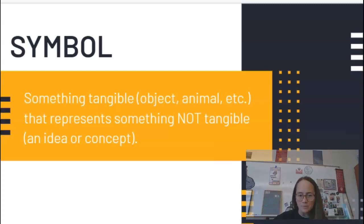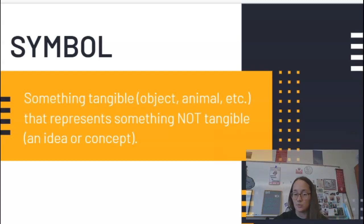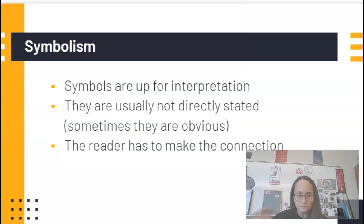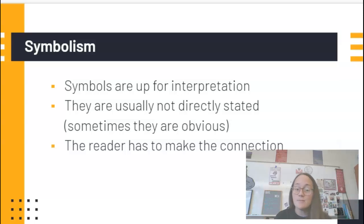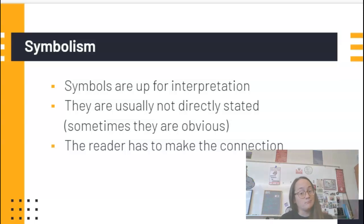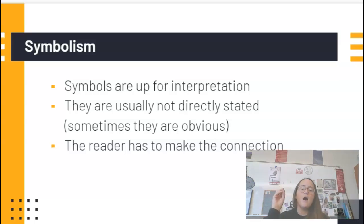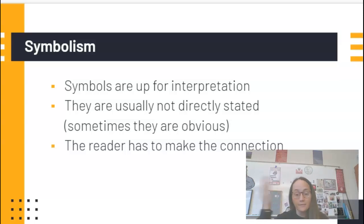We're going to talk more about symbols today. Before we get into looking at it in our story, I'm going to give you some examples from stories we've seen this year. Before we get into those stories, the first thing I want to mention is that symbols are up for interpretation — meaning I might see something and think it means one thing, and somebody else might think it means something different. Symbols are usually not directly stated, but sometimes they're super obvious.